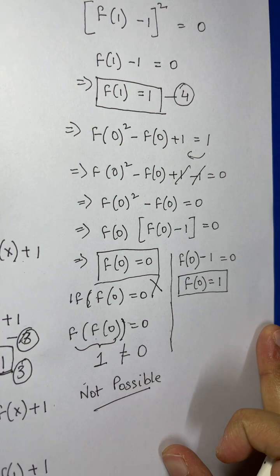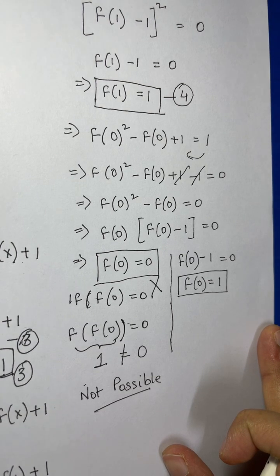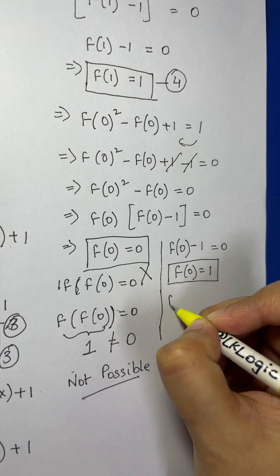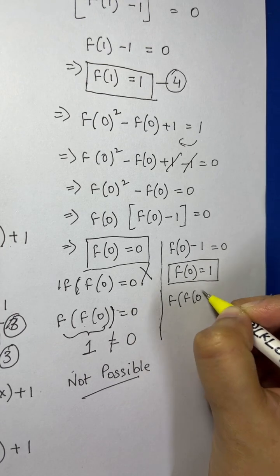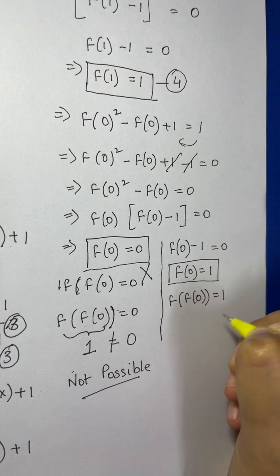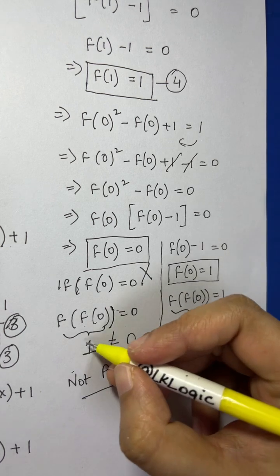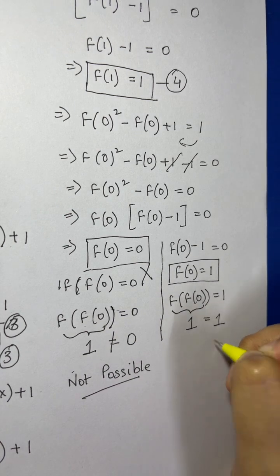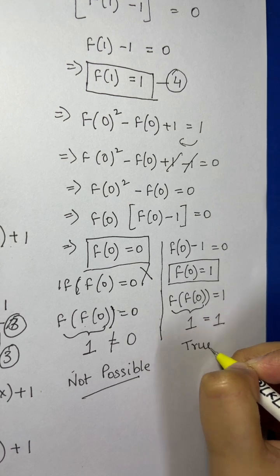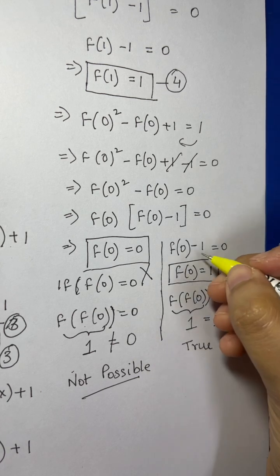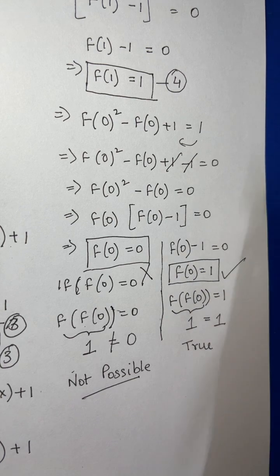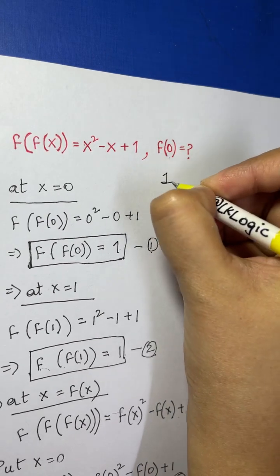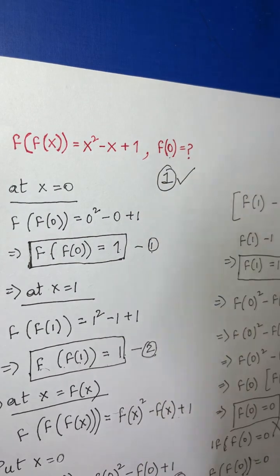Now let's check f(0) = 1. Applying f to both sides: f(f(0)) = f(1) = 1. From Equation 1, f(f(0)) = 1, so 1 = 1 — that's true! Therefore f(0) = 1 is the answer.